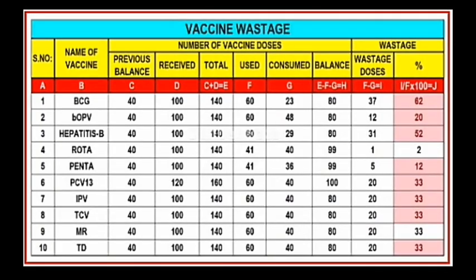Vaccine wastage chart. The columns are: serial number, name of vaccine, previous balance doses, received doses, total doses, used doses, consumed doses, balance doses, wastage doses, and percentage of wastage.